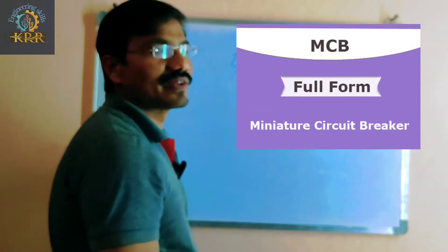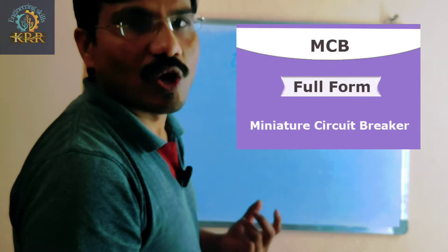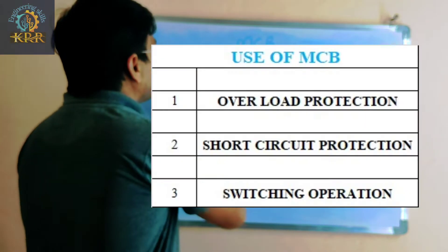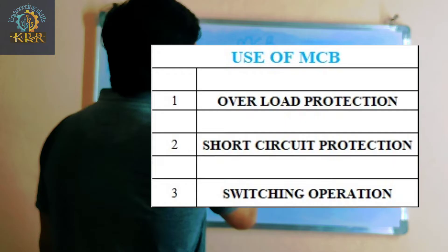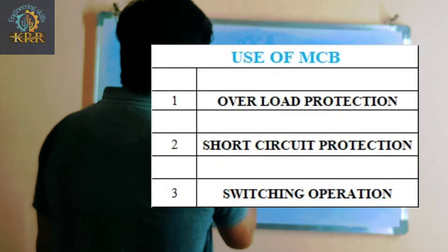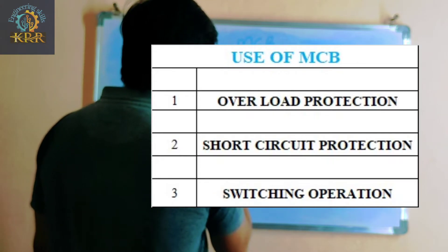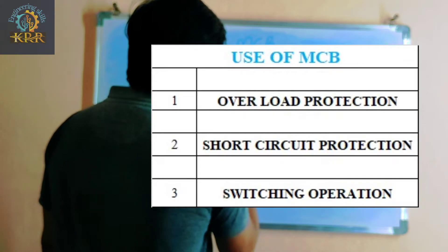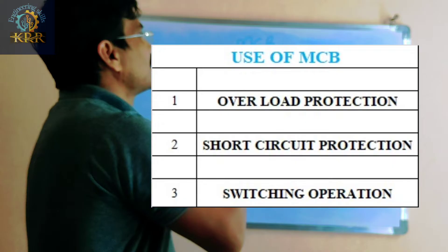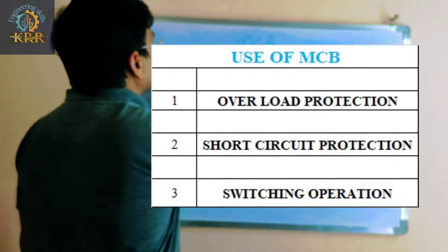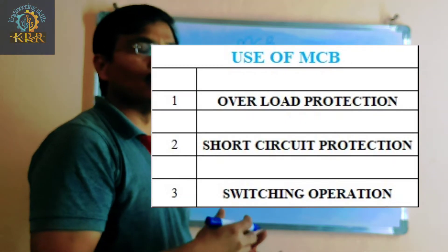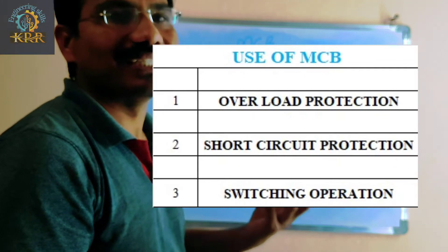The main uses of MCBs are three: first, for overload current protection; second, for short circuit current protection; and third, for switching operations. Now let's discuss how overload causes tripping inside the MCB.